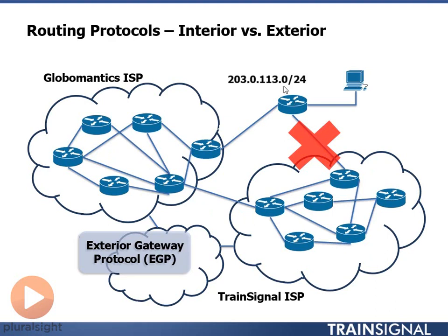In this way, we can experience very little or no service interruption when our internet service connection to one of our ISPs goes down. It allows us to move that IP space over to our other ISP. Is this the only thing BGP does? No — the Exterior Protocol is much more sophisticated, enabling reliable and robust connections between different ISPs out on the public internet.